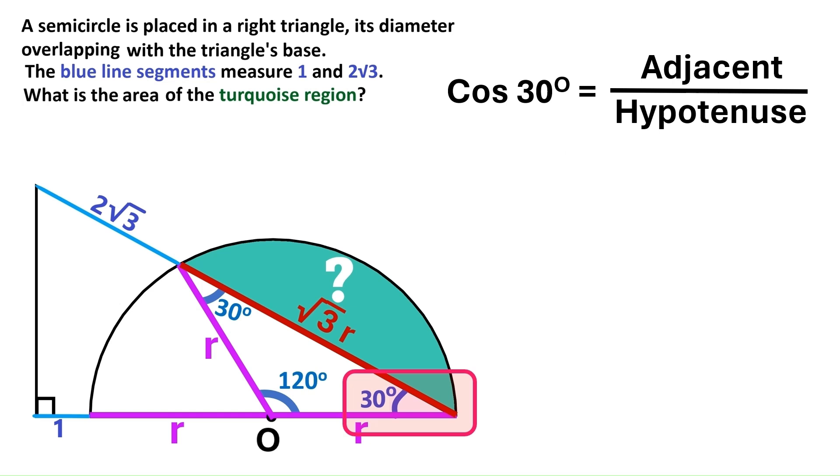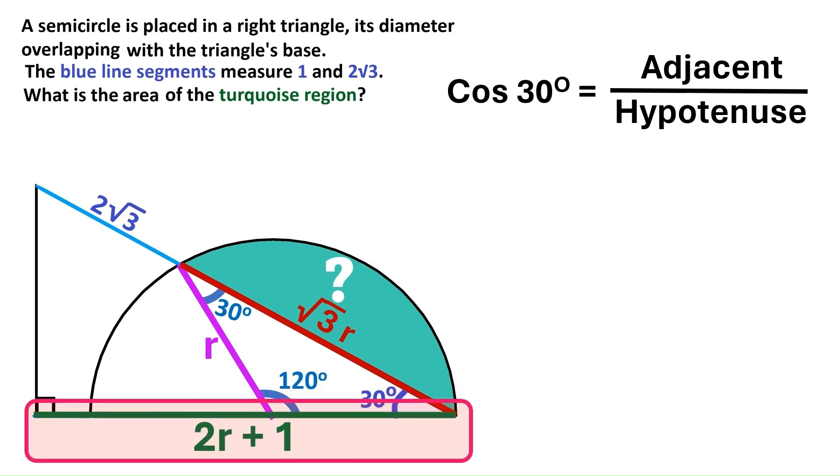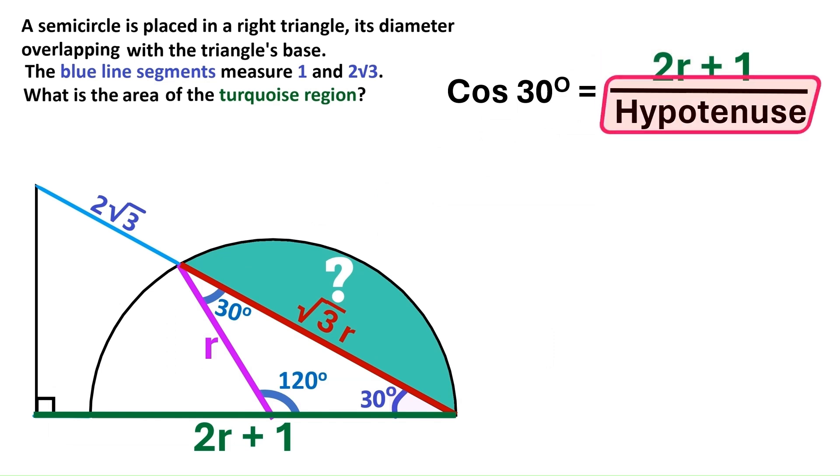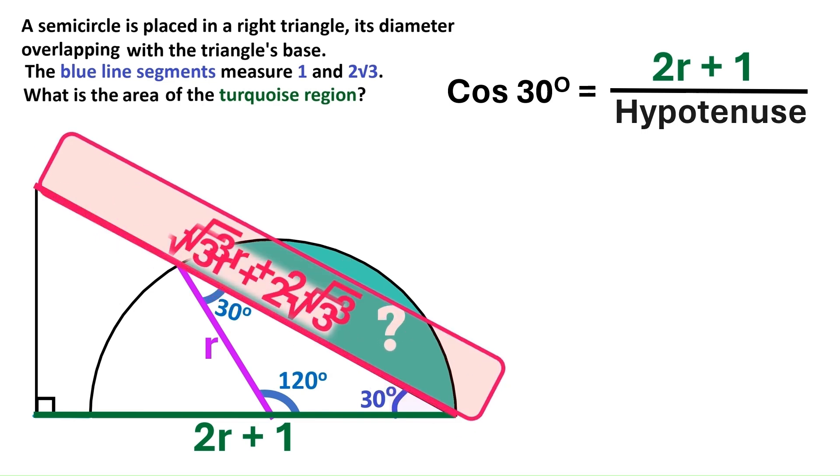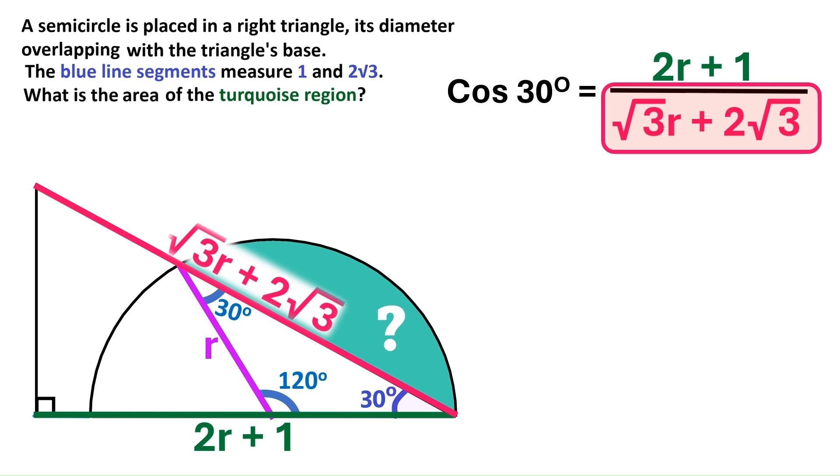This angle's adjacent side has a total length of 2R plus 1. So let's put that in our equation. And the hypotenuse is the longest side of a right triangle. And its total length is this. So let's also move this onto our formula. Cosine 30 has a well-known fixed value and it's radical 3 over 2.